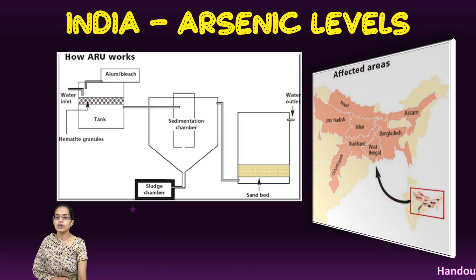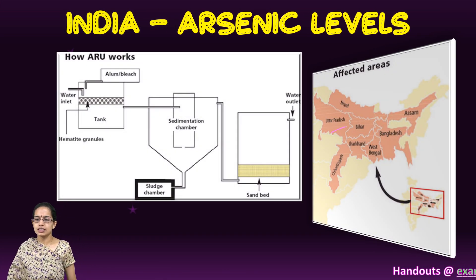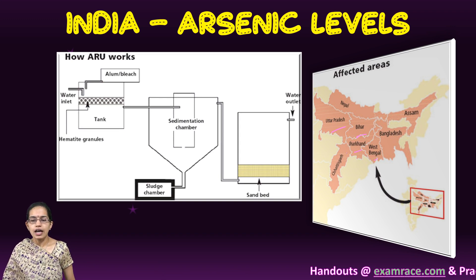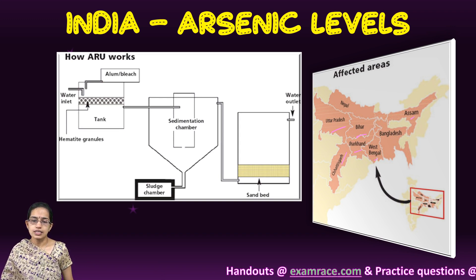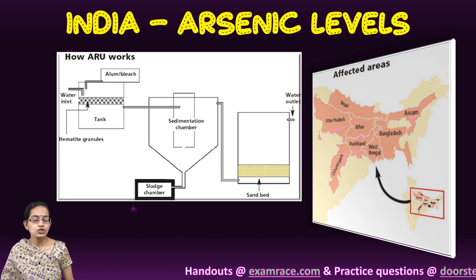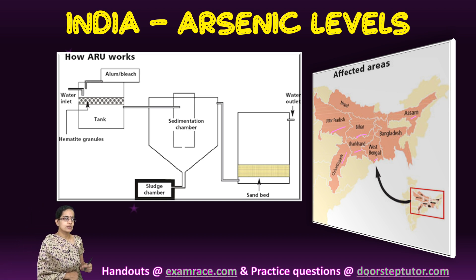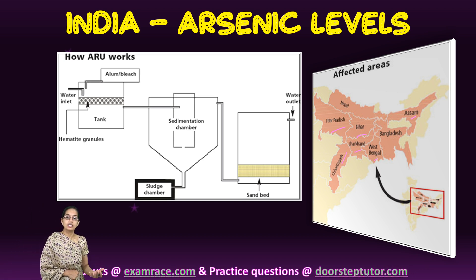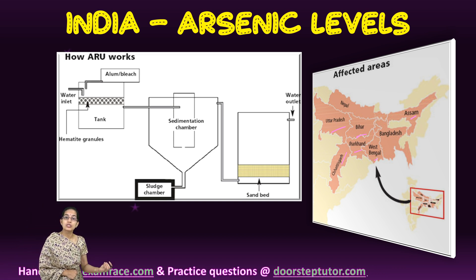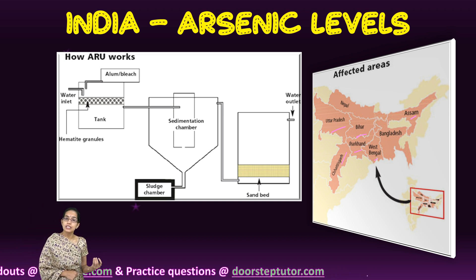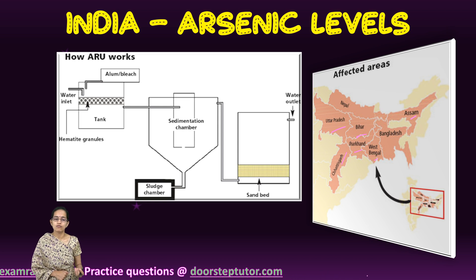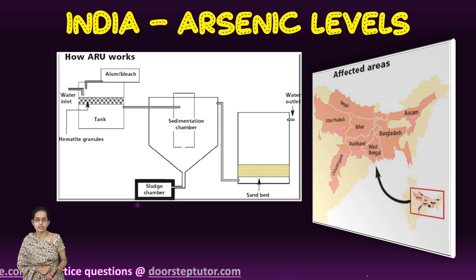Coming to India specifically, the areas with high arsenic proportions in soil are those adjoining Bangladesh. Exposure can lead to discoloration, multi-organ failure, and warts in certain cases.